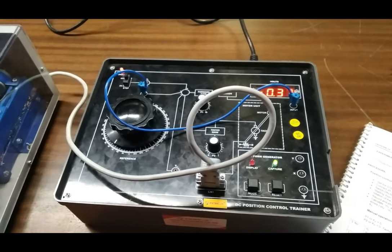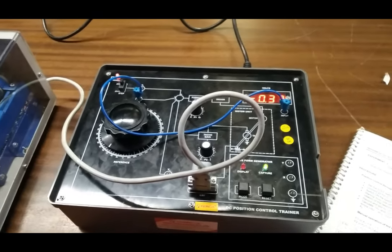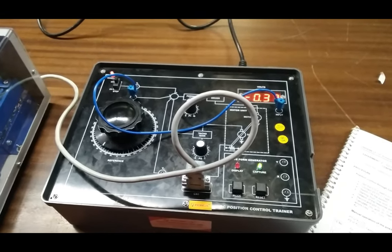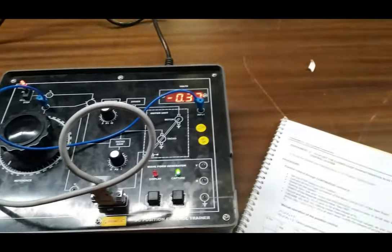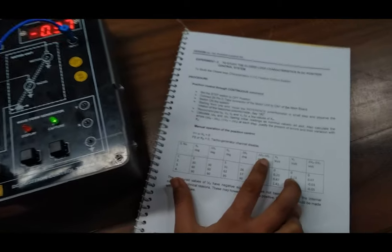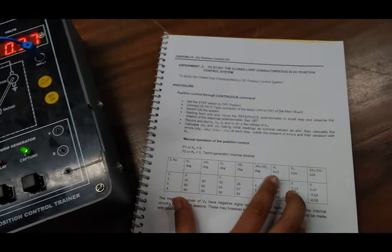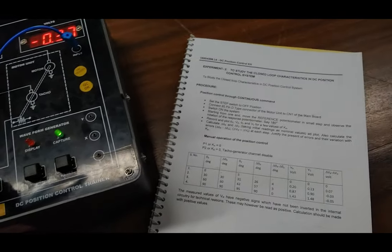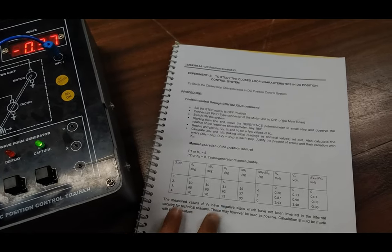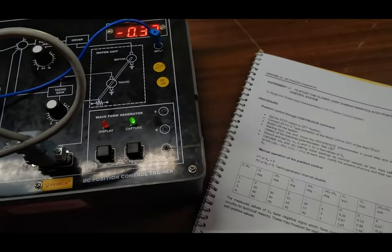Then we take the difference between delta theta r and delta theta 0. We take two more readings like this and plot the graph between them.